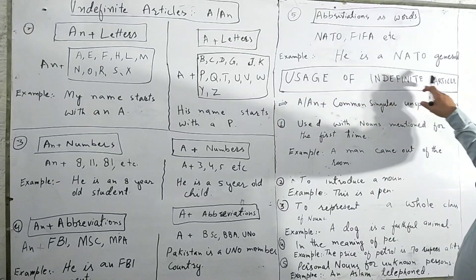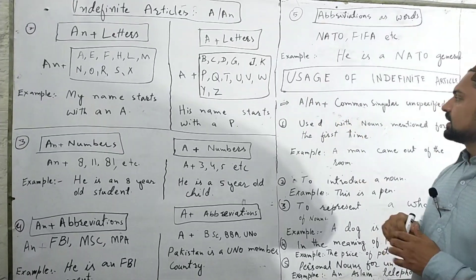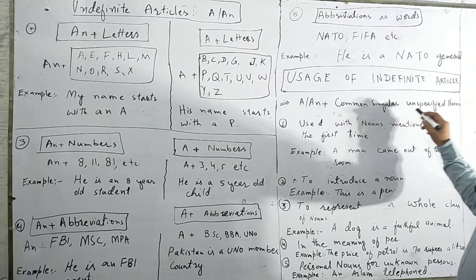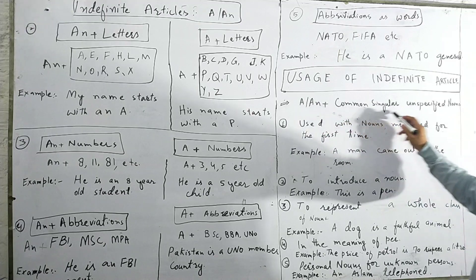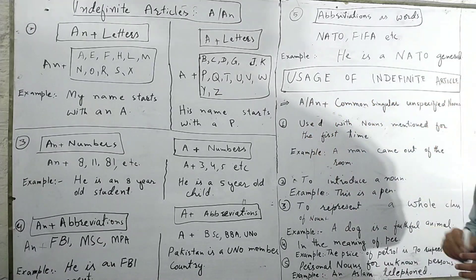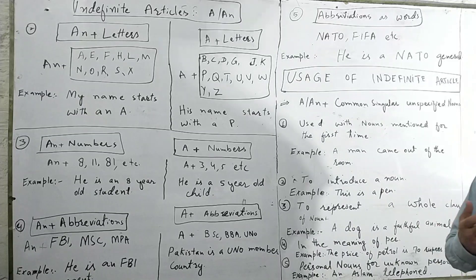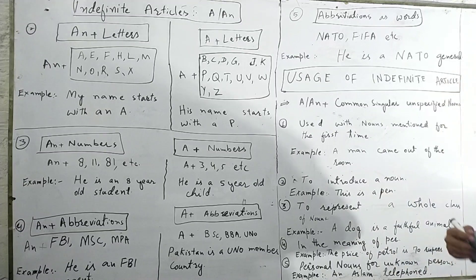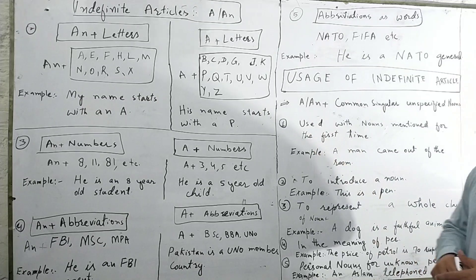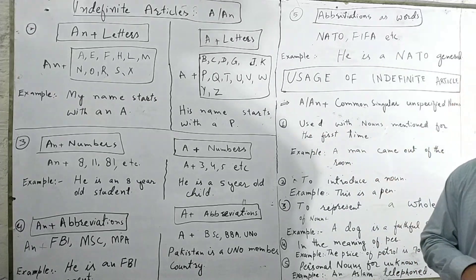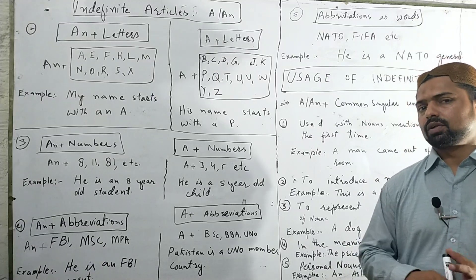Now let's discuss the uses of indefinite articles. First use: A and AN are used with common singular unspecified nouns — things that are not specified or known to either the speaker and listener or reader. They are also used when a noun is mentioned for the first time.